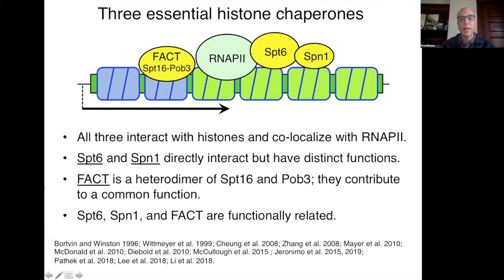SPT6 and Spt1 directly interact with each other but have distinct functions, which I'll discuss in a minute. FACT on the other hand is a heterodimer, and its two subunits are thought to contribute to a common function, although there is some evidence in the literature that they might do distinct functions as well. Even though each one is essential for viability, and there's a lot of evidence they have distinct functions, they are all functionally related by a huge amount of genetic and other data.